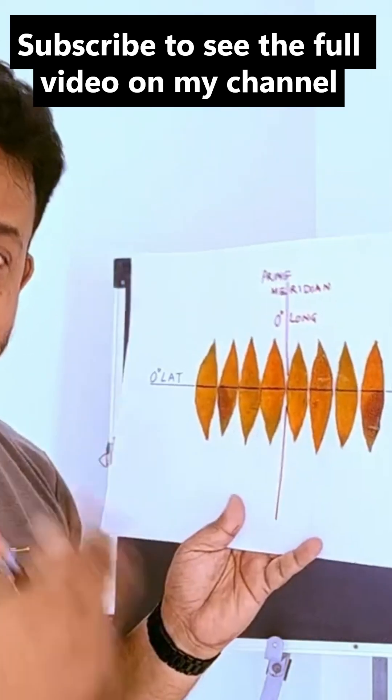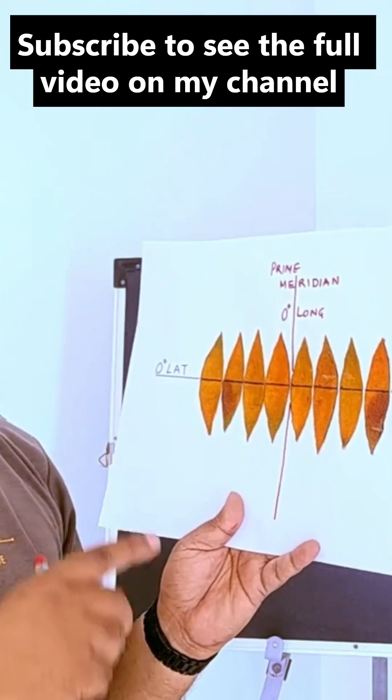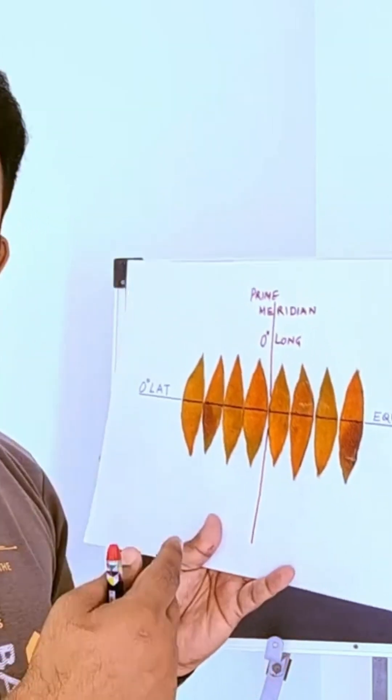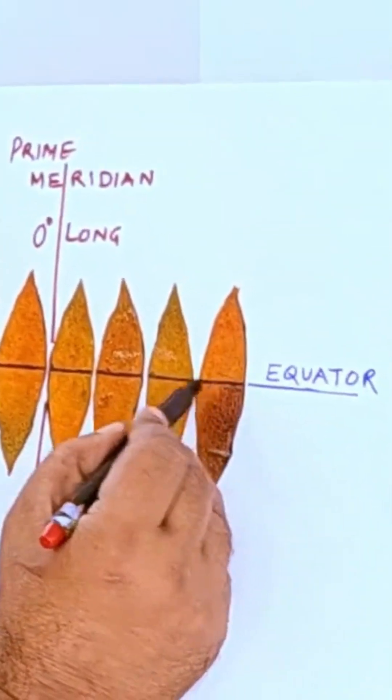Now in UTM projection, you have to make 60 such slices. Remember, a globe is 360 degrees. If you make 60 slices, then each slice will be 6 degrees apart.